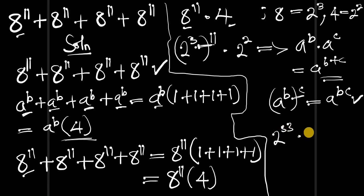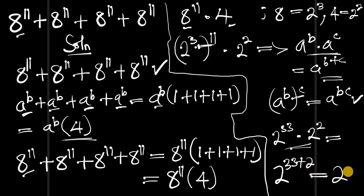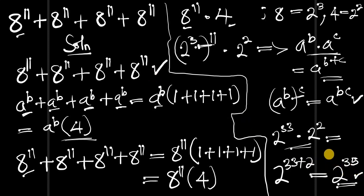We now have 2 to the power of 33 times 2 to the power of 2. Using the identity a^b times a^c equals a^(b+c), we add the exponents: 33 plus 2 equals 35. So the final answer is 2 to the power of 35.